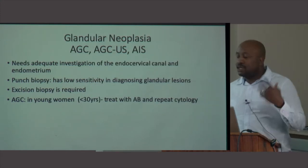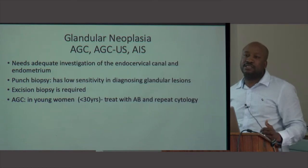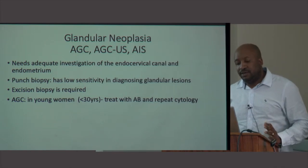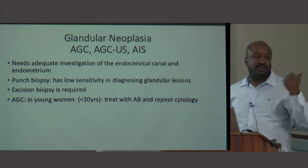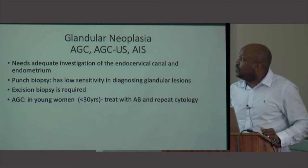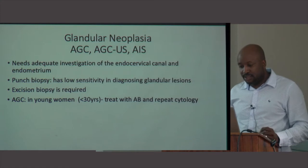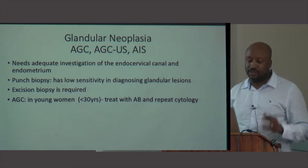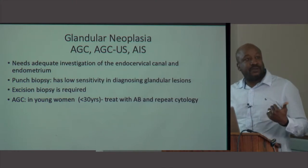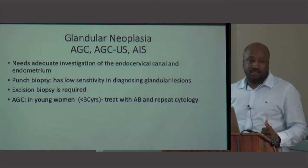Now briefly on the glandular part, which is a bit tricky. According to the Bethesda classification, you get atypical glandular cells — not otherwise specified. You have to be careful and investigate properly because you don't want to miss pathology from the endometrial cavity or higher up in the endocervix. A punch biopsy has low sensitivity for diagnosing glandular lesions. For young women who have atypical glandular cells, don't overtreat — usually give a course of antibiotics and repeat the cytology.